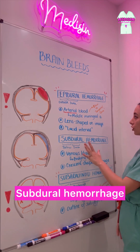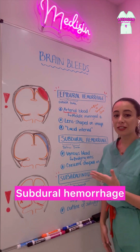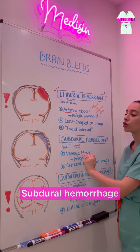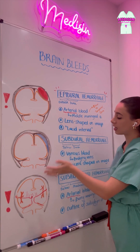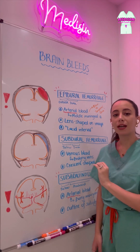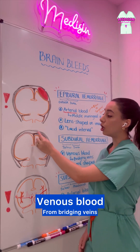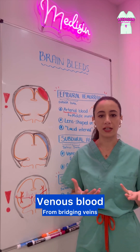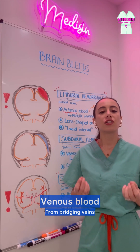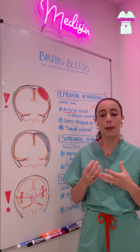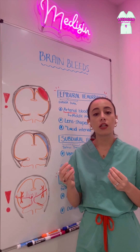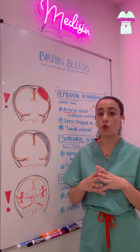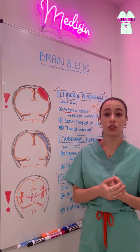Next, we've got subdural hemorrhages. Even though they sound similar, they're actually really different. Sub means below, and again, dura is that covering around the brain. Subdural hemorrhages are usually made up of venous blood, because below the dura we usually have a lot of veins and sinuses, which are filled with venous blood. These are really low pressure systems — blood in the veins moves really slowly. That means bleeding in this area is really not going to cause that rapid expansion that we see with epidural hematomas.